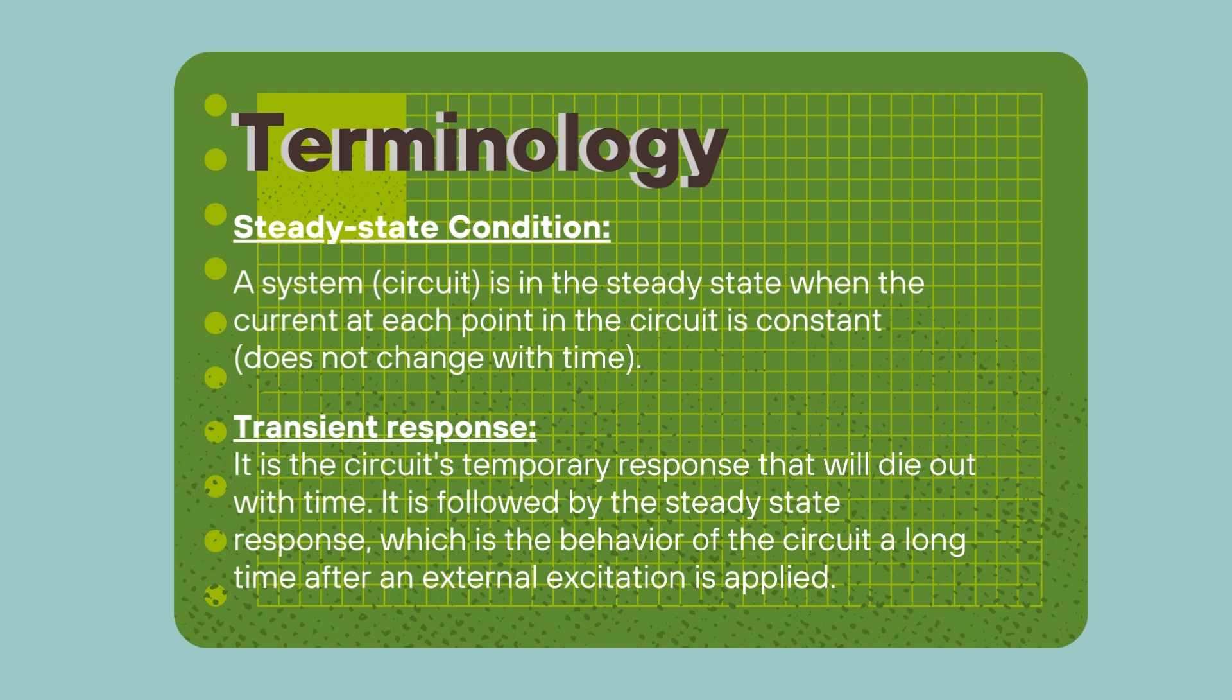As for the transient response, when we say transient response, it is the circuit's temporary response to an excitation that is applied to the circuit. And it is followed by the steady state response. So after something external that happens to the circuit, an excitation that is external that occurs to the circuit, the circuit will go into a transient response. And following that transient response, the circuit will reach a steady state condition where all the variables that were jumbled up by that excitation will reach stability.